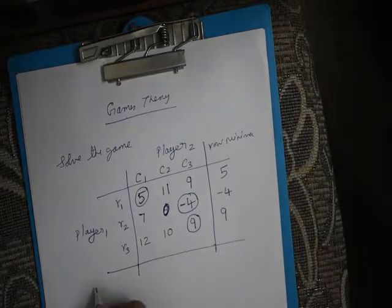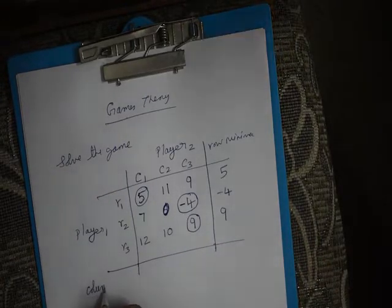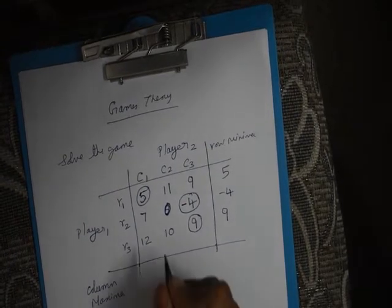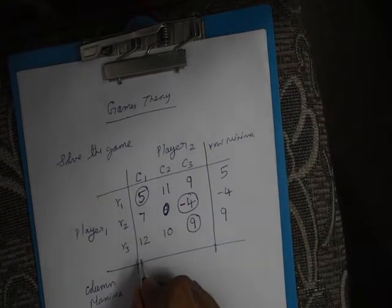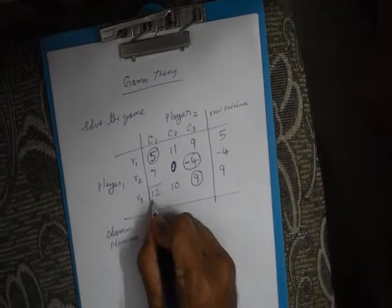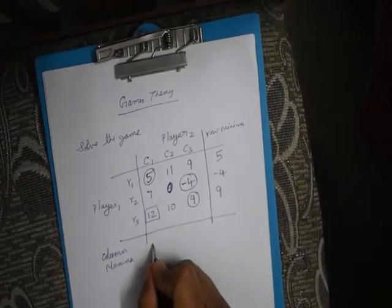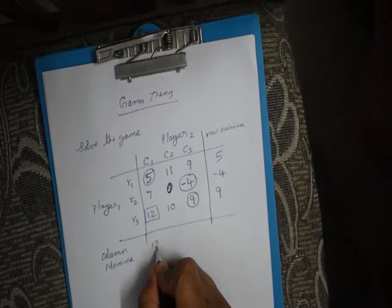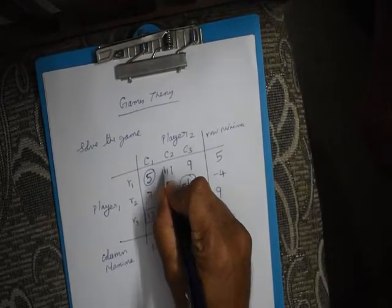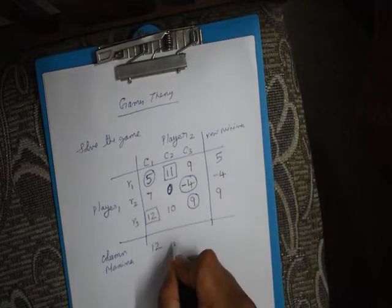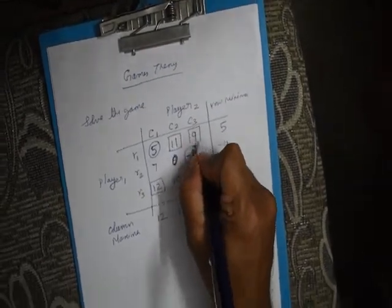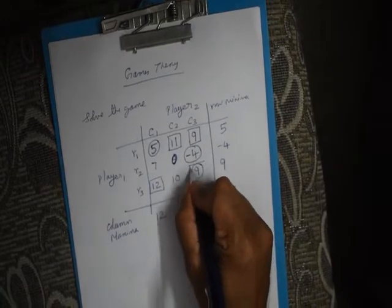Correspondingly, for Player 2, you identify the Column Maxima. For column 1, the maximum is 12 — draw a box on 12 and write the value below that column. For column 2, it is 11. For column 3, it is 9 — there are two 9s, so box both of them.